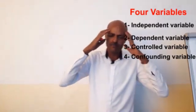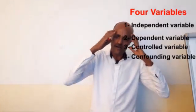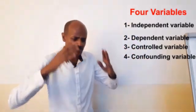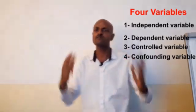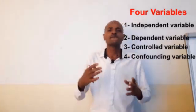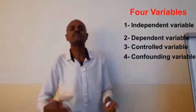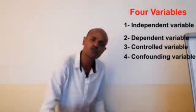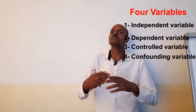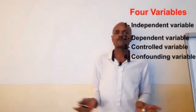Confounding variables are variables that can change the outcome of an experiment, but the experimenter cannot control these variables.